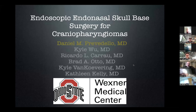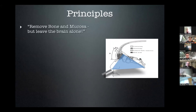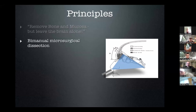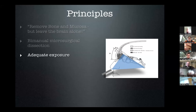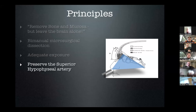Craniopharyngioma really helps us think through the approach. When we go endonasal, we really respect skull-base principles where we basically don't touch the brain and go all the way into the base of the skull and the interpeduncular fossa, which is very important in this area. It is difficult to find another approach that gives you visualization of the interpeduncular fossa without touching the brain as the endonasal does. Very important principles of bimanual dissection — you shouldn't be doing anything inside the ventricle with only one hand.